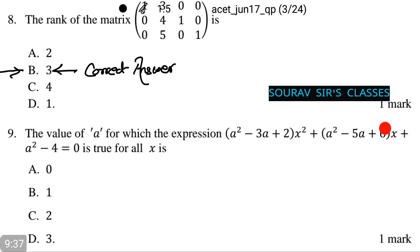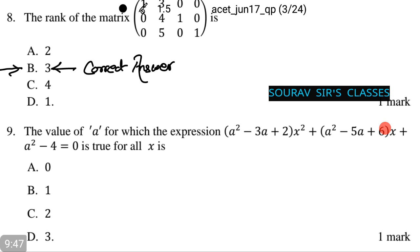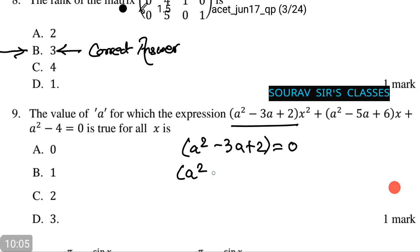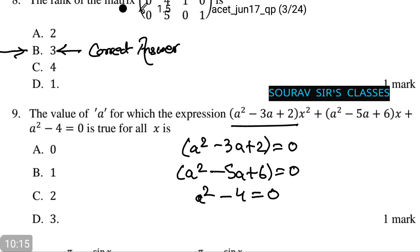The next question requires finding the value of a for which the given expression is true for all x. The expression is an identity if a squared minus 3a plus 2 equals 0, and a squared minus 5a plus 6 equals 0, along with a squared minus 4 equals 0 — all hold simultaneously. Thus a equals 2 is the correct answer, which is option c.